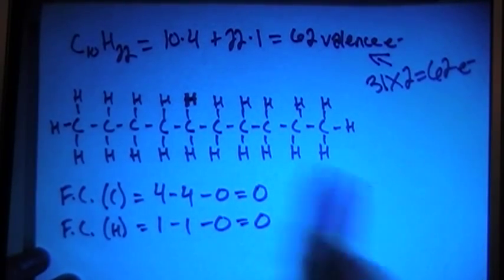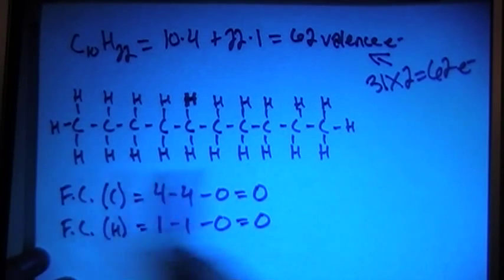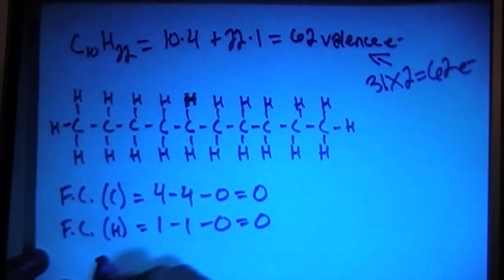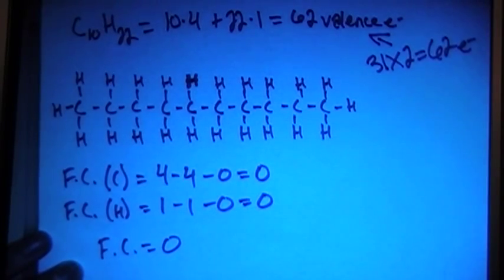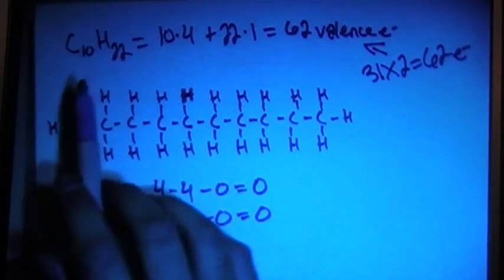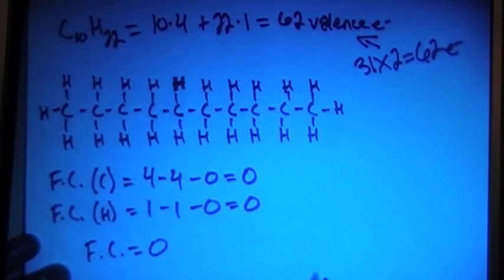So if you were to sum up all the formal charges for each of the atoms in this compound, the overall formal charge is going to result in 0, which is what you're looking for when you're dealing with a non-charged atom such as this C10H22 up here. So that's good.